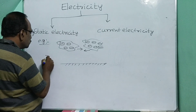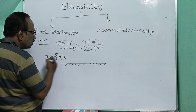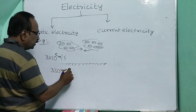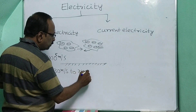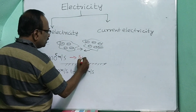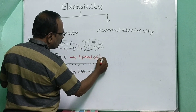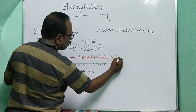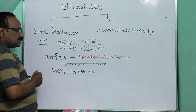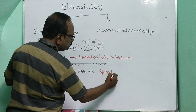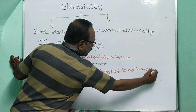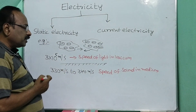The speed of light in vacuum is equal to 3 × 10⁸ meters per second. The speed of sound in air is equal to 330 to 340 meters per second. These values are most important. Speed of light in vacuum is nearly 3 lakh kilometers per second. Speed of sound in medium is nearly 330 to 340 meters per second.